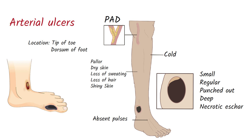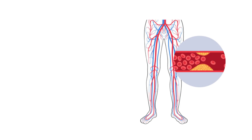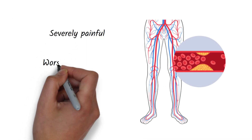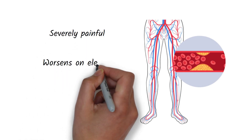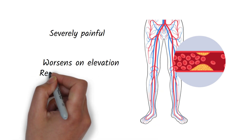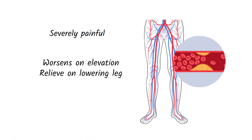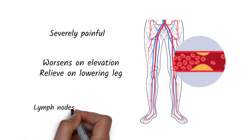Arterial ulcers may also have a necrotic eschar. The floor will also look dry and will be less likely to bleed. Arterial ulcers are severely painful, and the pain worsens when the patient is lying in bed or when elevating the leg. It improves with lowering the leg because gravity improves the blood supply. Lymph nodes can be palpated if the ulcer is infected.